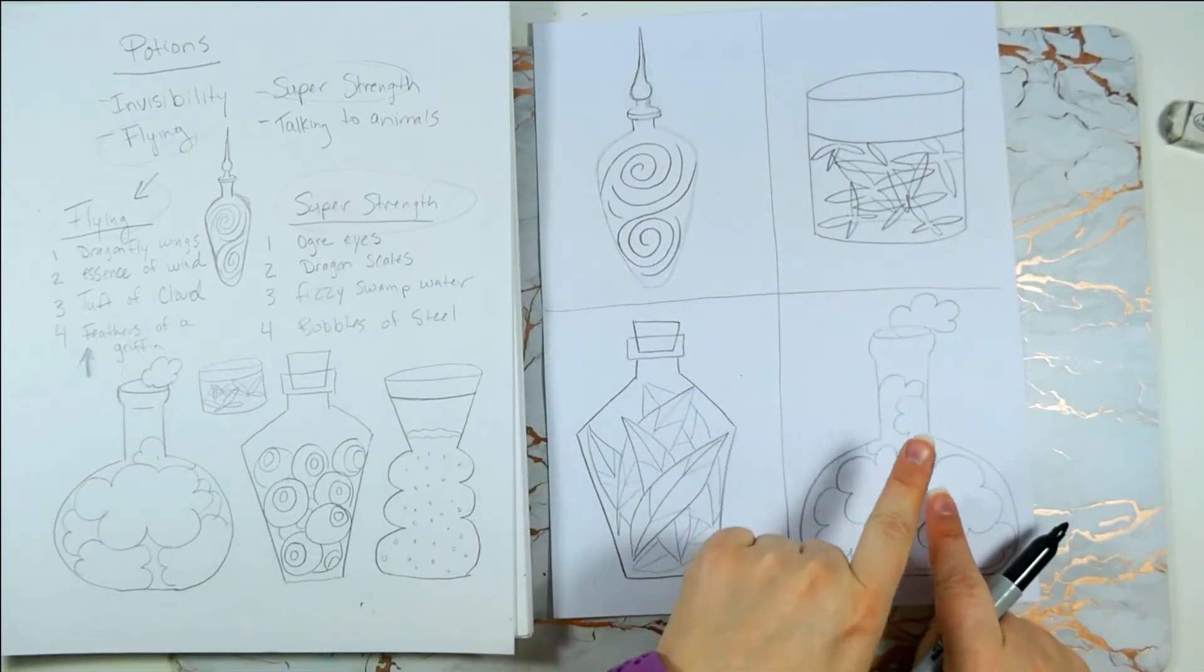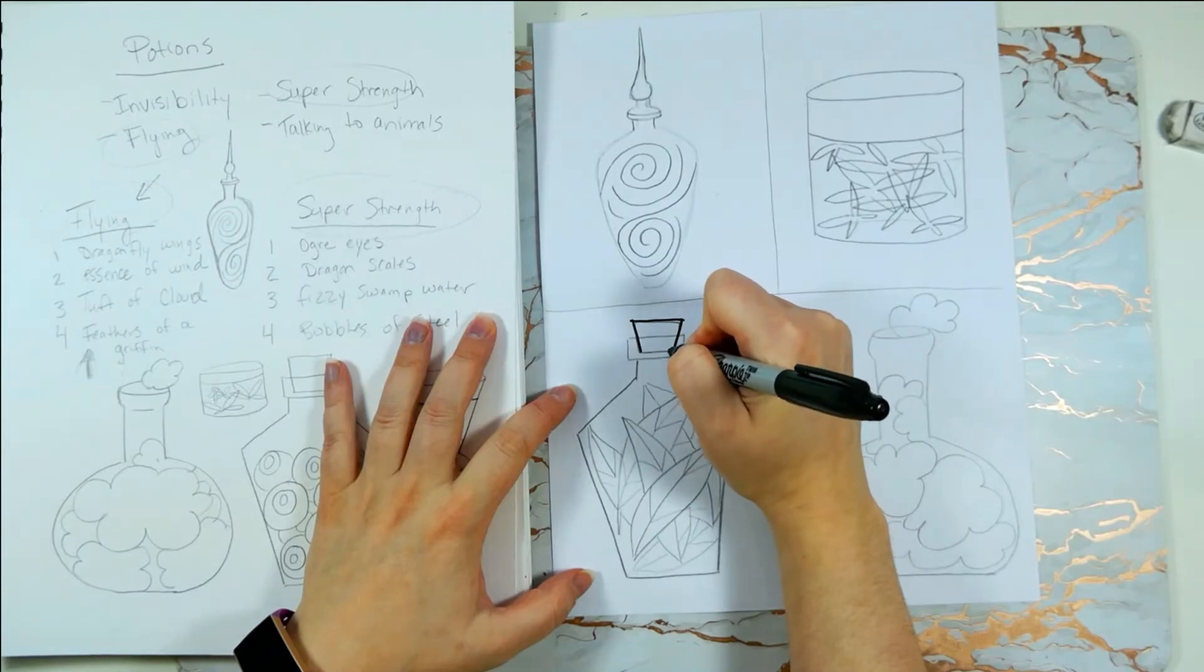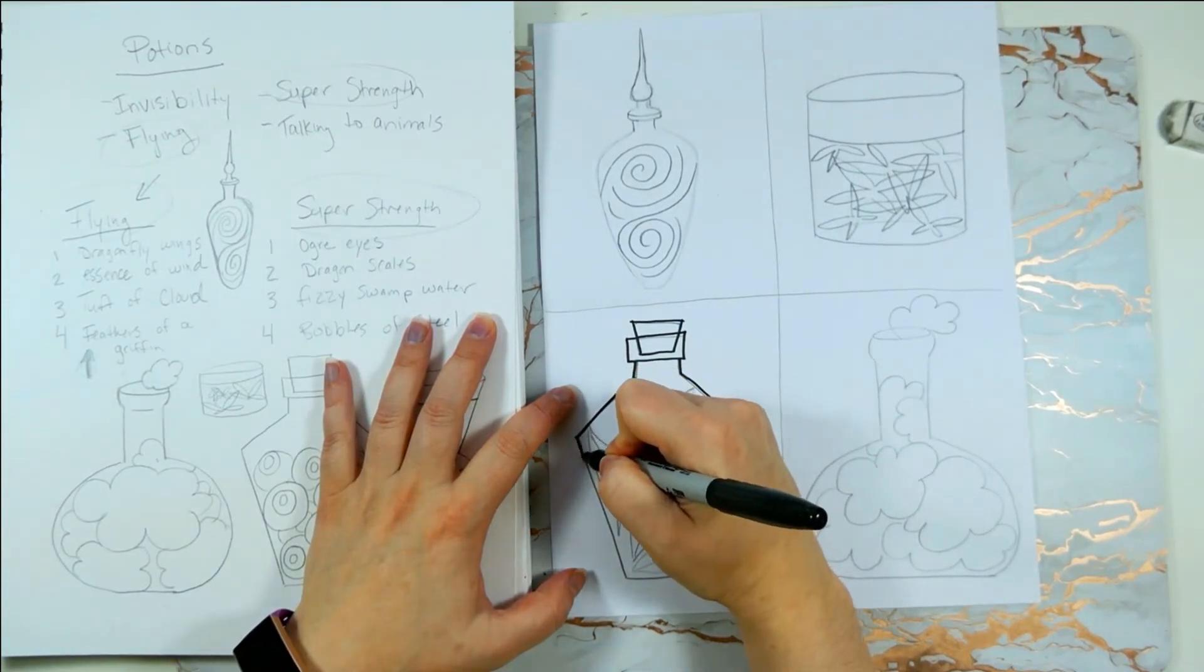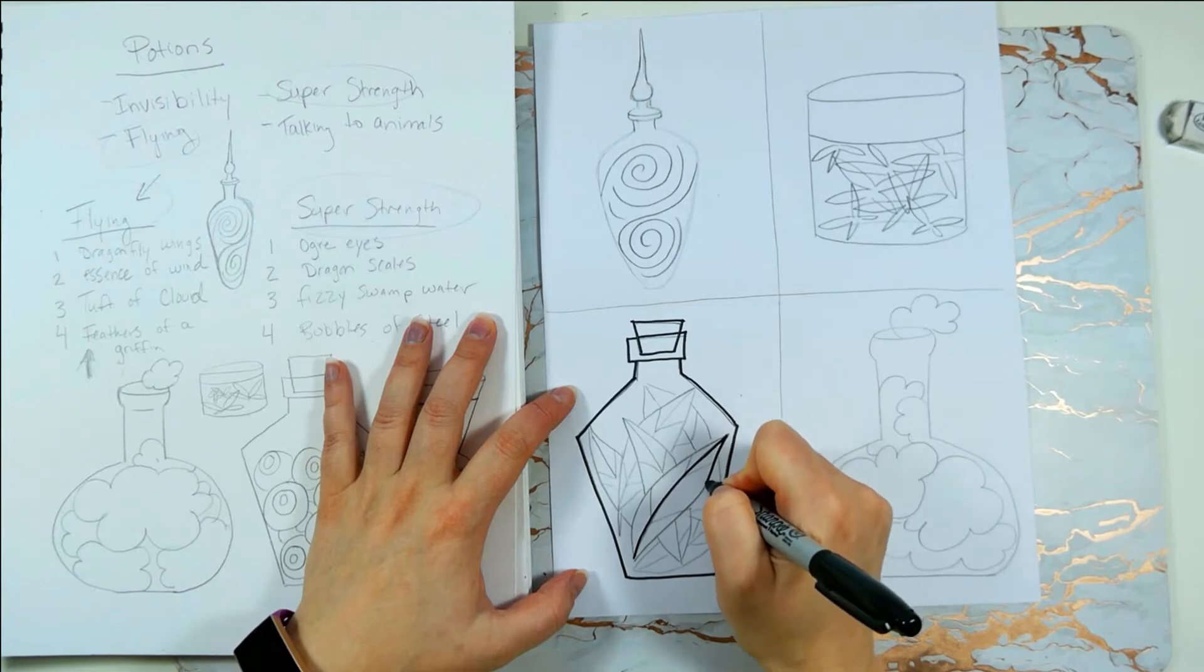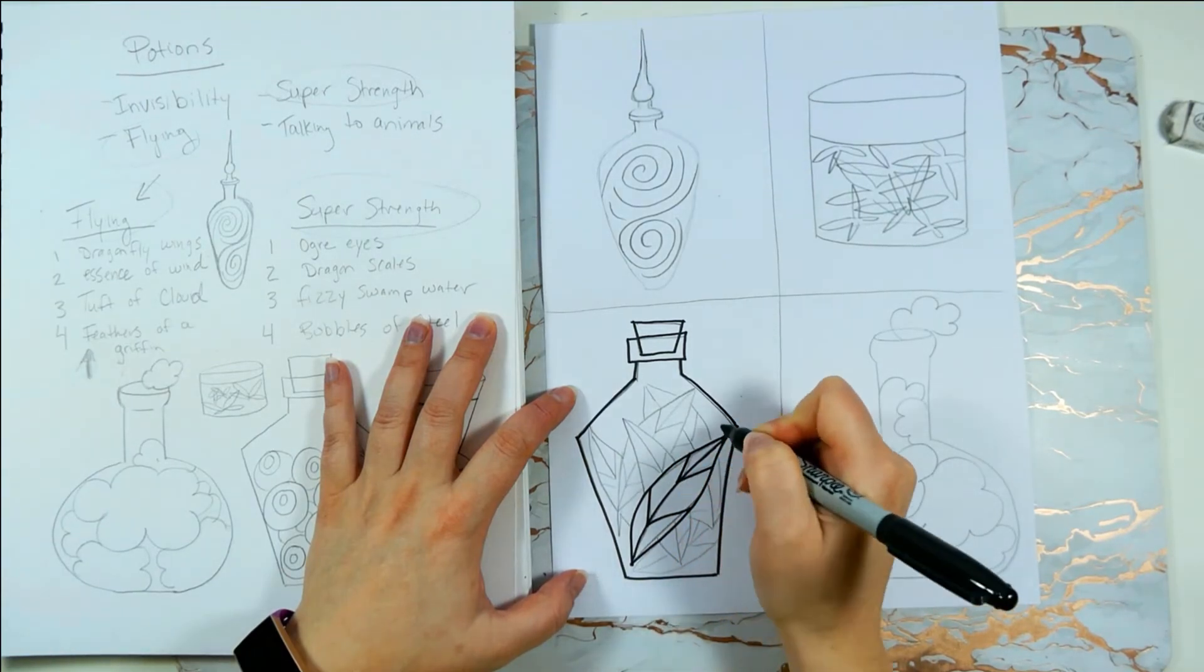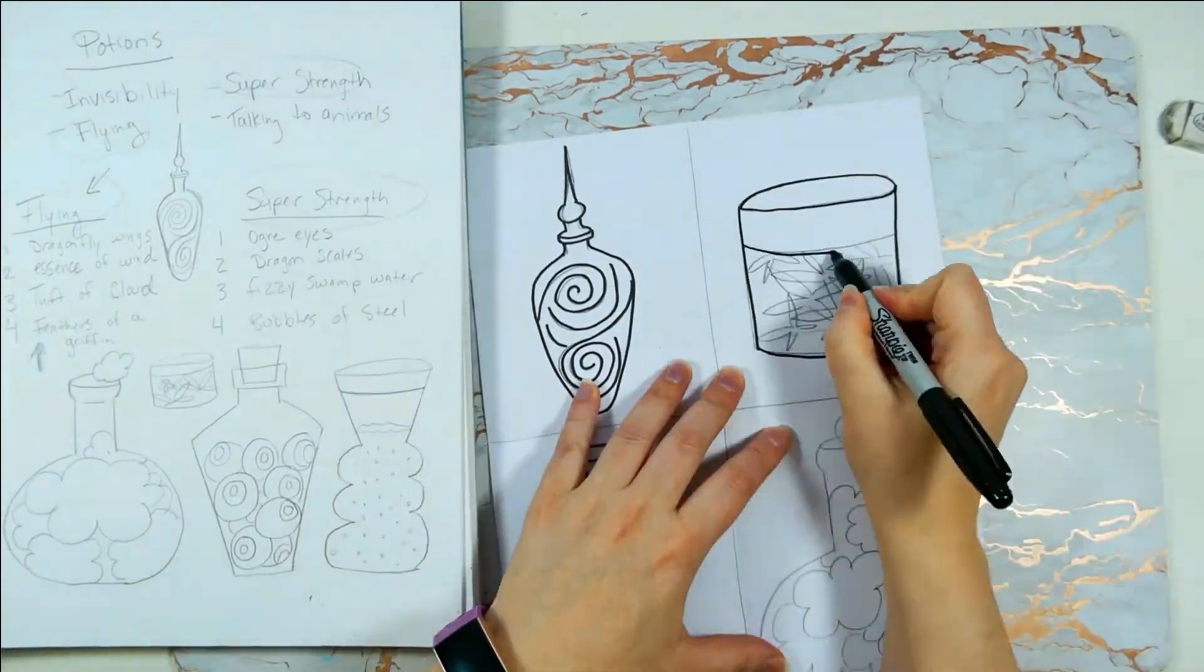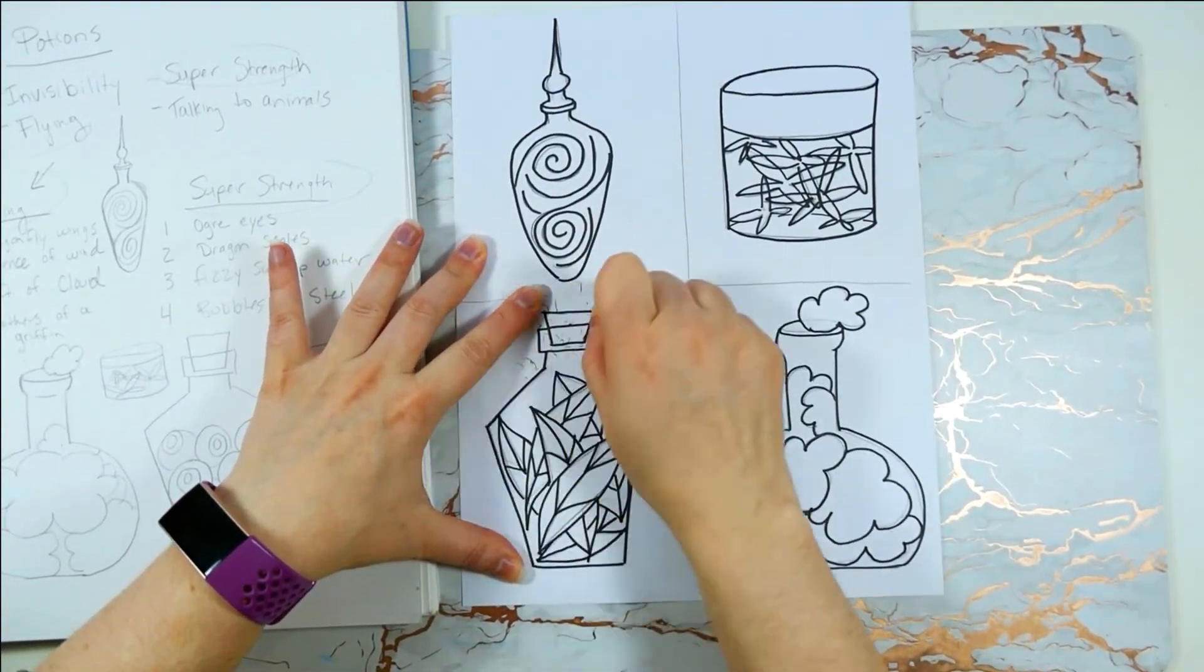After you've drawn the ingredients inside your containers you're going to trace. Now I'm tracing with a thicker sharpie but you can use a thinner one if you like. I'm using a thicker one just because I can see the lines better. For this project because we're not going to be painting it doesn't actually have to be a permanent marker, it can be a regular black marker because it's not going to get wet. After you've traced make sure to erase any pencil lines.